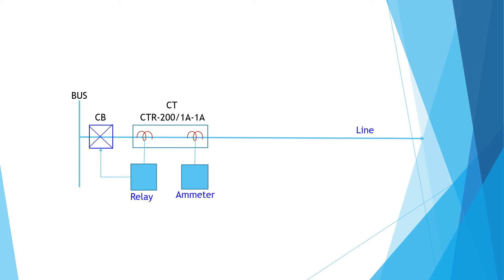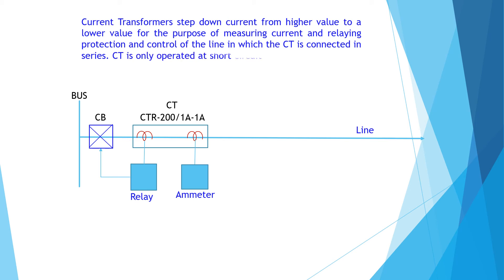The current ratio is substantially constant for given range of primary current and phase angle error is within specified limit. VA rating, that is burden of current transformer, is very small, in the order of 15 VA, 30 VA, etc.